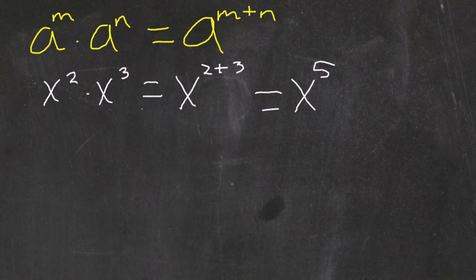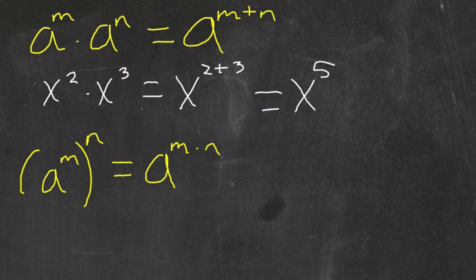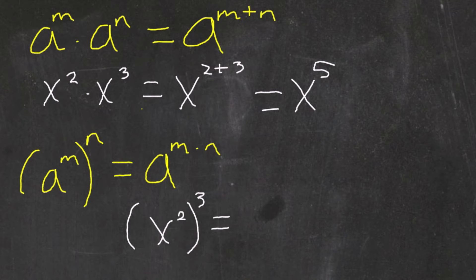The law of exponents also tells us that if I have a certain number raised to an exponent, and it's being raised to another exponent, we can simplify this expression by rewriting the base and multiplying the exponents. For example, let's say we had x squared raised to the third power. We can simplify this by saying x raised to the 2 times 3, which would give us x raised to the sixth power.